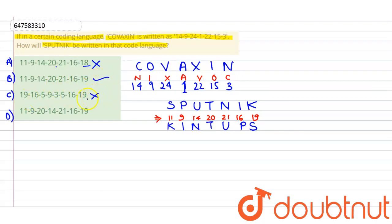Option D starts with 19 so it's wrong. 11, 9, 14, 20 is not there. Thus we have our answer, that is option number B is our answer. Answer is option number B.